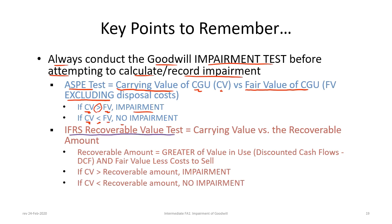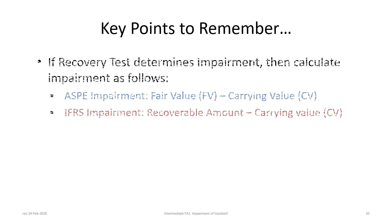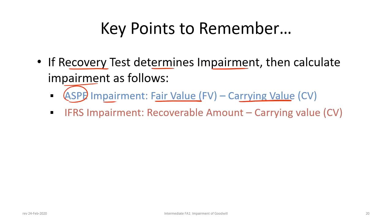The IFRS test compares carrying value versus the recoverable amount, which is the greater of value in use (discounted cash flows) and fair value less cost to sell. As with ASPE, if carrying value exceeds the recoverable amount, impairment exists; if carrying value is less, there is no impairment. To calculate impairment under ASPE, take fair value minus carrying value. Under IFRS, take recoverable amount minus carrying value.